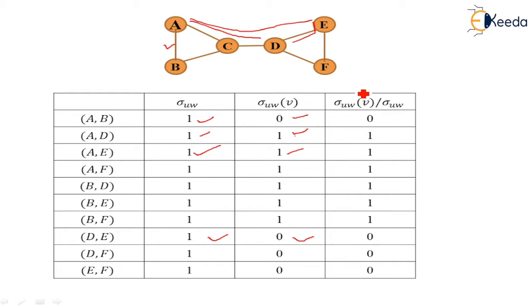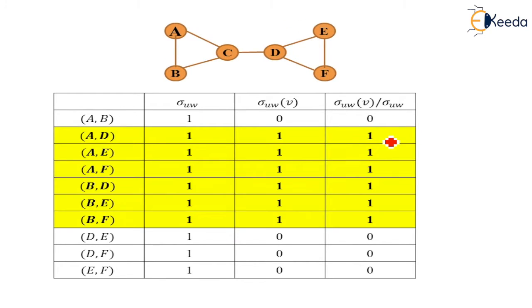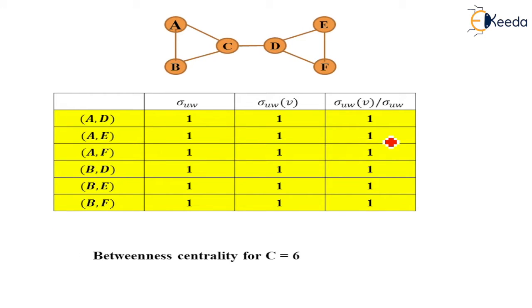Now we will take the ratio of this. 0 upon 1, we get the value 0. Then 1 upon 1, we get the value 1. And so on we calculate. Now these are the elements where we are able to find the betweenness of C. So that betweenness centrality for C is equal to 6. After summation of all this, we come to the value as 6.